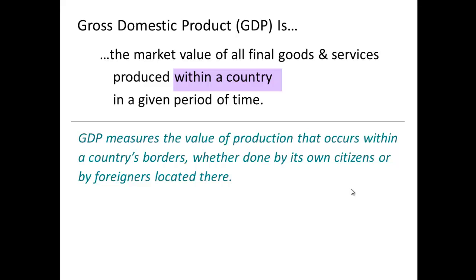If it was made in Mexico, it would be included in the Mexican GDP. If it was made in China and sold here, it would not be counted in the US GDP — it would be counted in the Chinese GDP.